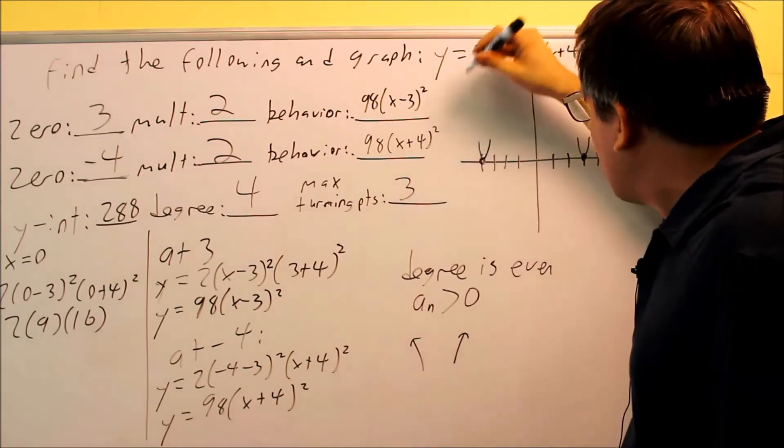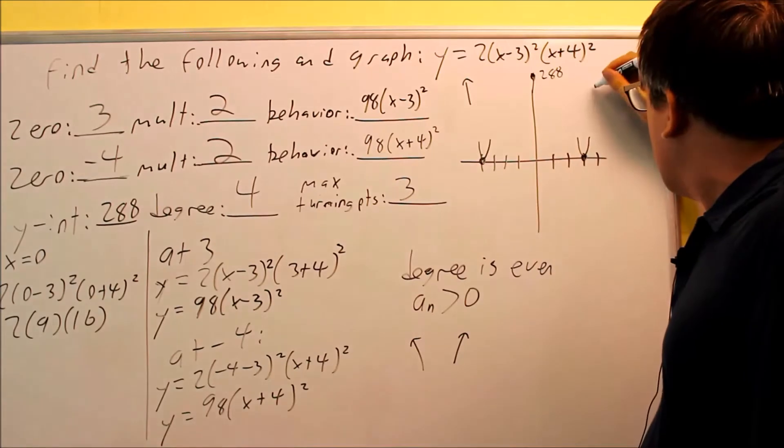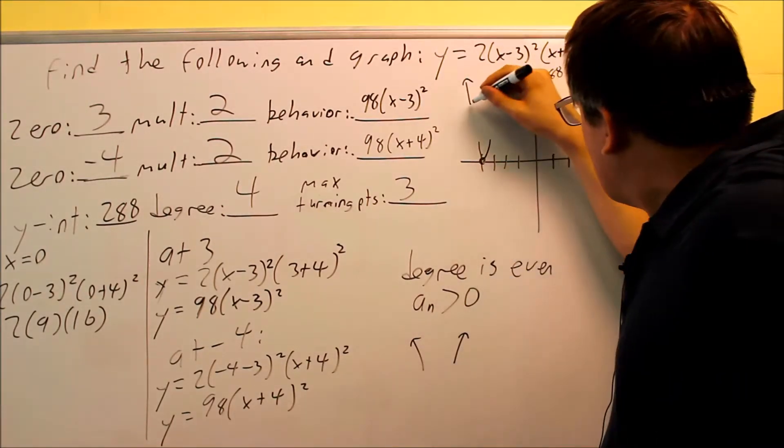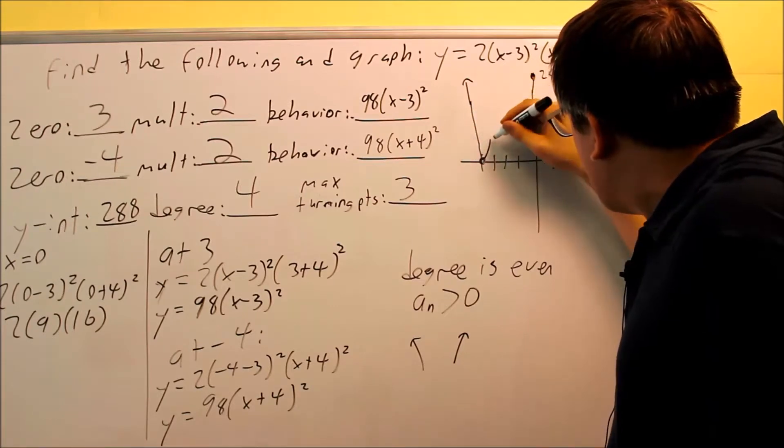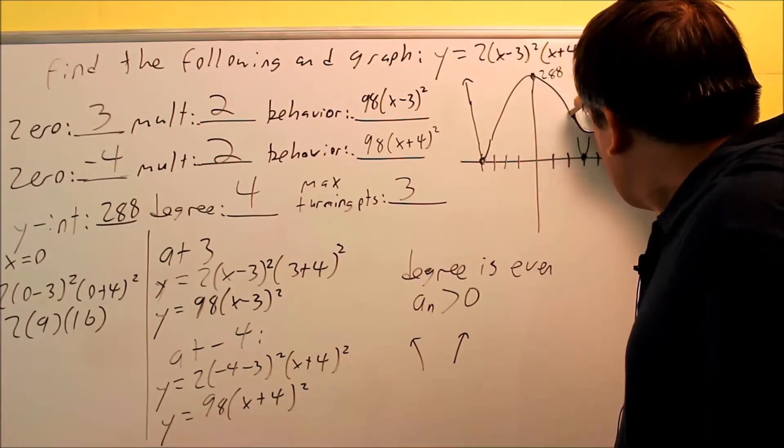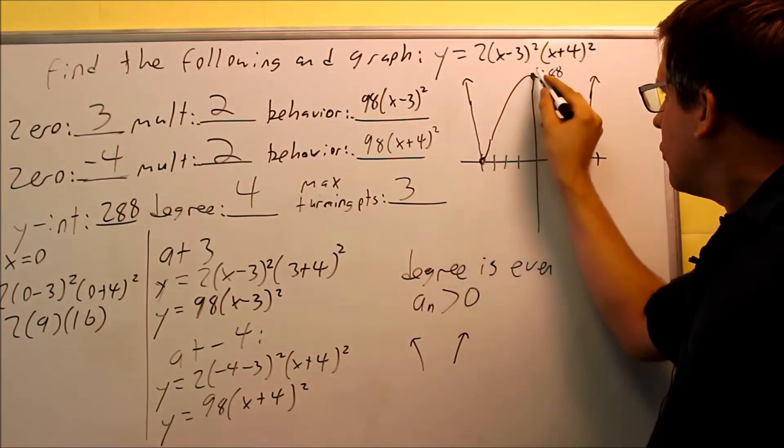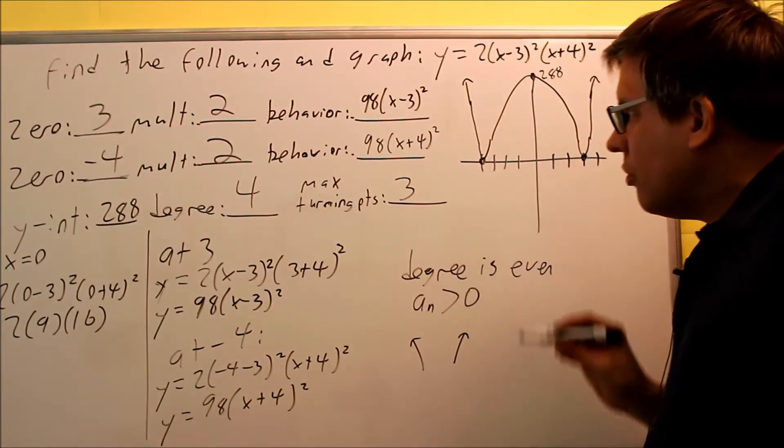So I know that, let me erase these, so it's not confusing. I'm going to put an arrow here and another arrow there. So then when I connect it, the graph is actually going to look like a big W. It's going to go down and look something like this. The graph will come down, it'll hit this, go through 288, come back down, and go through.